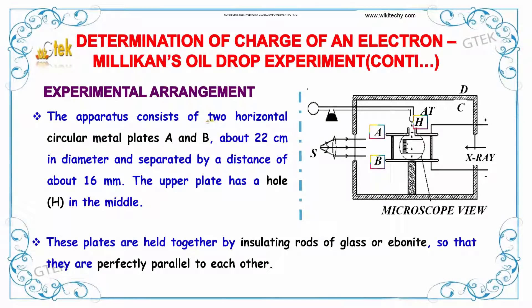The apparatus consists of two horizontal circular metal plates A and B, about 22 cm in diameter, separated by a distance of about 16 mm. The upper plate has a hole in the middle and these plates are held together by insulating rods of glass or ebonite so that they are perfectly parallel to each other.